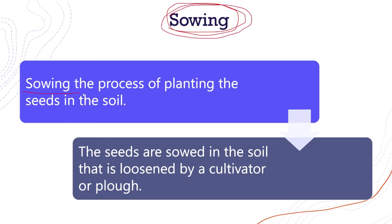The next step is sowing. Sowing is the process of planting the seeds in the soil. After plowing, we plant a seed into the soil and cover it up; as a result the seed germinates, becomes a sapling, then a mature plant. The seeds are sowed in the soil that has been loosened by the cultivator or plow, and then the seed is covered up by the soil.